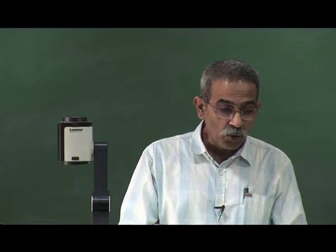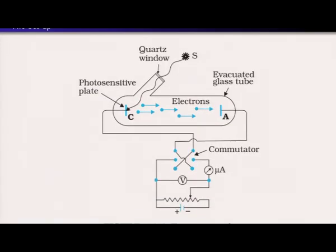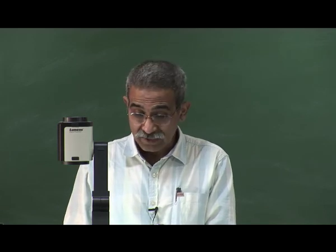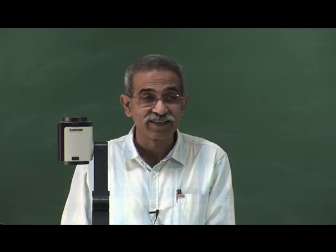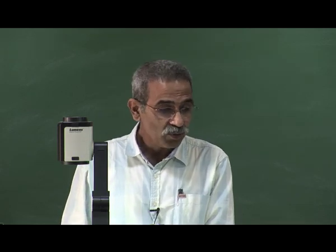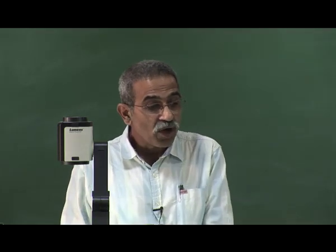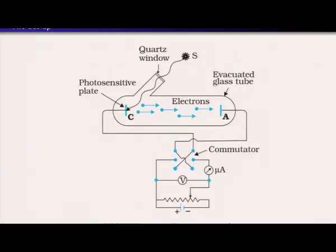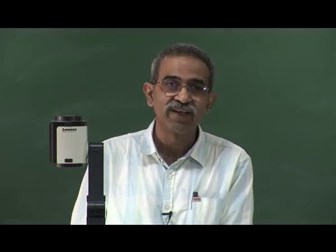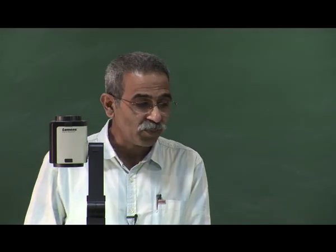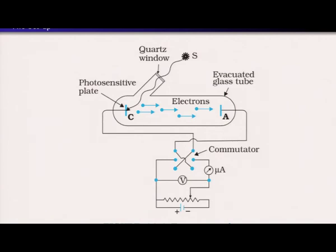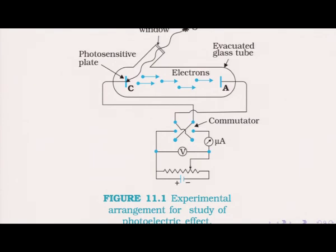So this is the experiment. The manipulation of potential difference is shown through the commutator, voltage source, and potentiometer. You need an evacuated glass tube because you do not want any resistance for the motion of electrons, and there could be stray ions that corrupt your data. You create as good a vacuum as possible and then perform the experiment. This is figure 11.1 in your CBSE class 12 textbook.